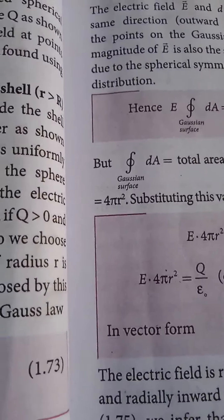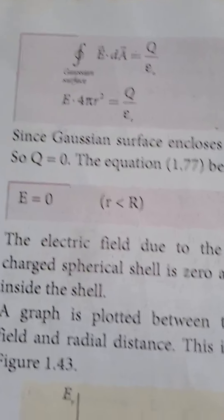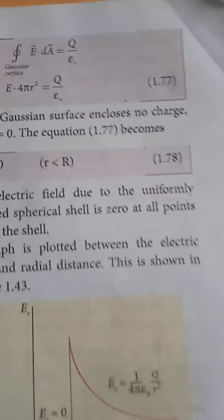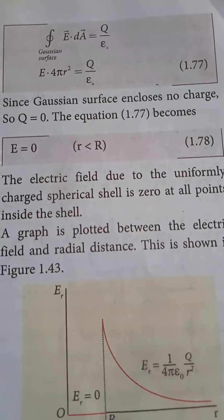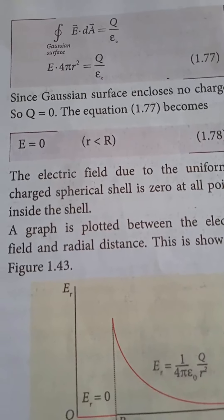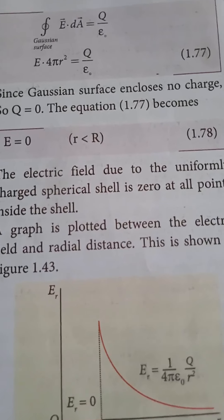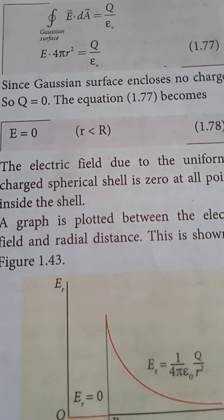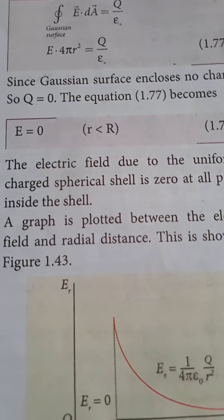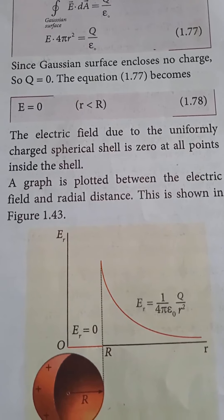For any point inside the spherical shell, the Gaussian surface encloses no charge. Since the enclosed charge is zero, by Gauss's law, the electric flux through the Gaussian surface is zero. Therefore the charge enclosed is zero, and the electric field is also zero inside.